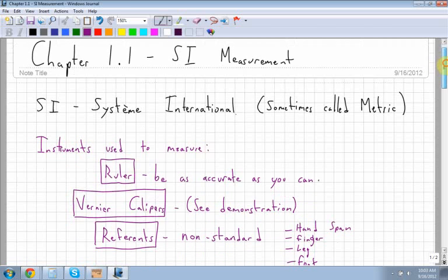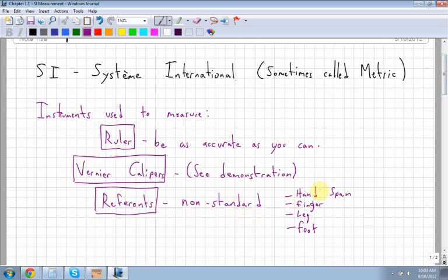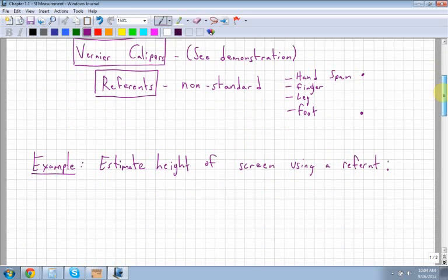The next thing we have are called referents. Referents are non-standard ways of measuring, like your hand span, finger, leg, or foot. If you measured your foot to be approximately a foot - about 12 inches long - and you pace off your yard to see how big it is, you could say, 'I paced off my yard. I went 50 paces that way, and 20 paces the other way.' You could accurately measure your yard and even how much area it encompasses. With referents, you measure the referent first, then use that referent to measure.